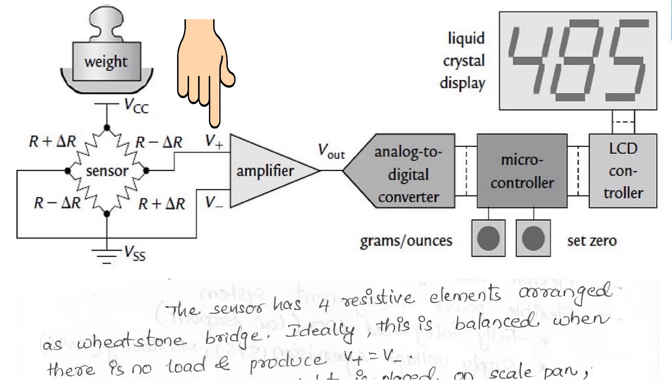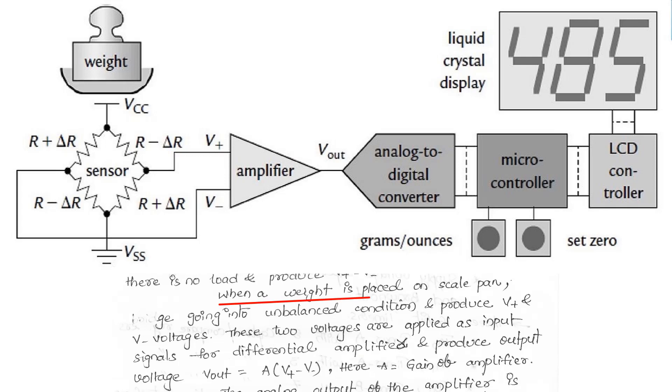When a weight is placed on the scale pan, the bridge goes into an unbalanced condition and produces V+ and V- voltages. These two voltages are applied as input signals for a differential amplifier and produce output voltage Vout equal to A times (V+ minus V-).